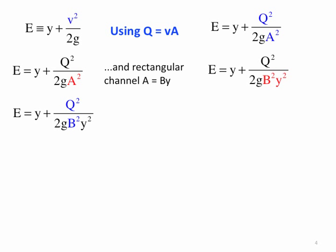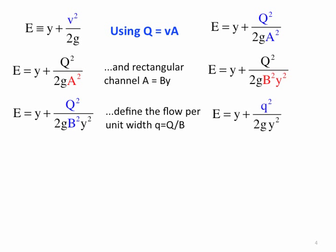So let's think about this q squared over B squared. We're going to define a small q as a flow per unit width, that is q over B. We then end up with this equation that's a little bit simpler to look at.